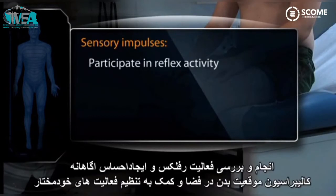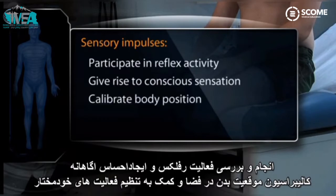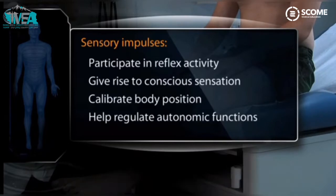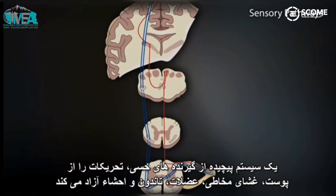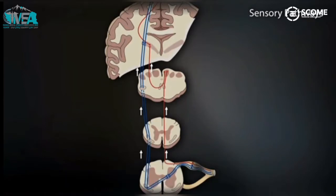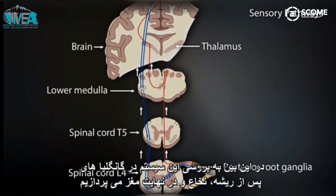Sensory impulses participate in reflex activity and give rise to conscious sensation, calibrate body position in space, and help regulate autonomic functions such as blood pressure, heart rate, and respiration. A complex system of sensory receptors relays impulses from skin, mucous membranes, muscles, tendons, and viscera that travel through peripheral projections into the posterior root ganglia, and are eventually directed to the spinal cord and into the brain.